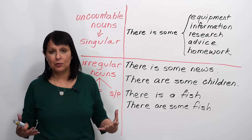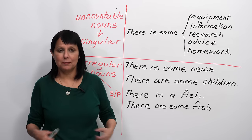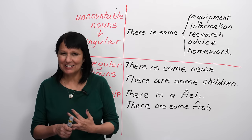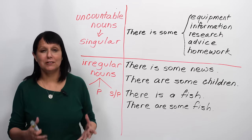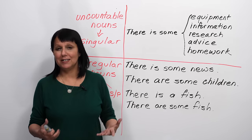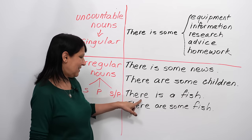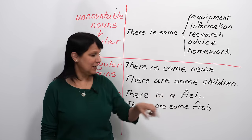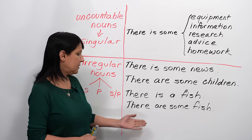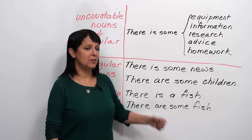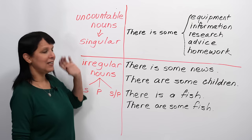Sometimes we have words which are plural with no S — for example, 'children,' 'men,' 'women.' No S on those words, but we're talking about more than one. So we would say 'there are some children in that room.' And then we have some really irregular words in English like 'fish,' 'sheep,' or 'deer,' where the same word refers to one or to a million. So 'there is a fish' or 'there are some fish in the aquarium' — the singular and plural form of 'fish' is the same word.